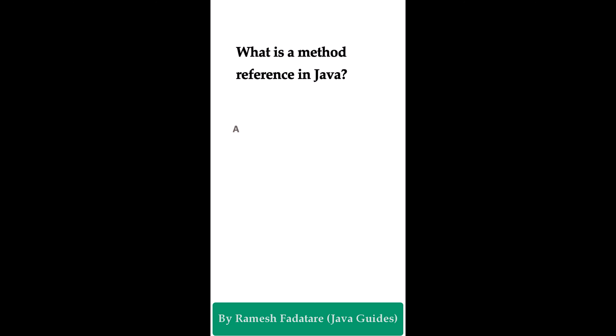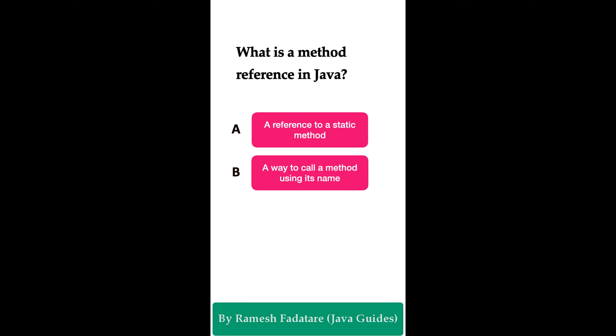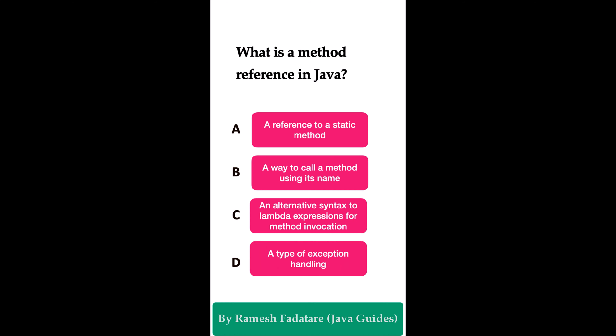What is a method reference in Java? Option A: a reference to a static method. Option B: a way to call a method using its name. Option C: an alternative syntax to lambda expressions for method invocation. Option D: a type of exception handling. The correct answer is option C. Method references were introduced in Java 8 and provide an alternative, shortened syntax to lambda expressions used to refer directly to methods.